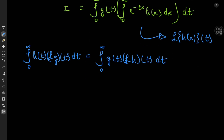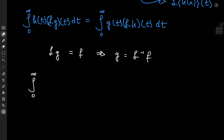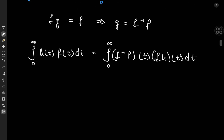But how do we get this equation in the form stated at the beginning? That is simply a matter of notation. Let's call the Laplace transform of g the function f, which implies that g is the inverse Laplace transform of f. Writing the equation with this new notation: the integral from 0 to infinity of h(t) times f(t) dt equals the integral from 0 to infinity of the inverse Laplace transform of f, times the Laplace transform of h, dt. Now let's try it out on a classic integral.